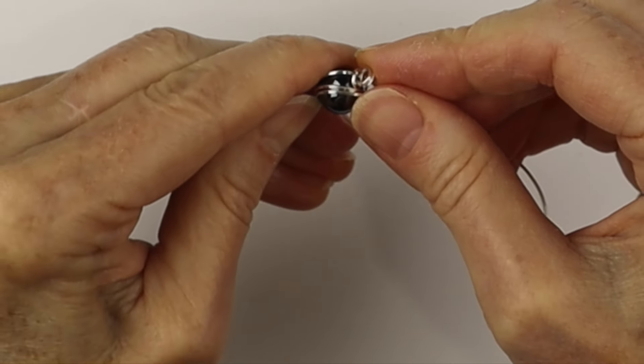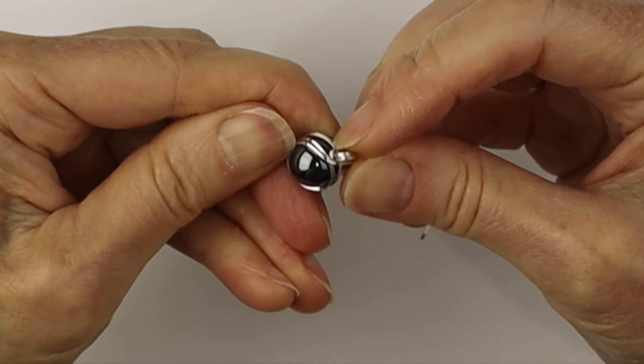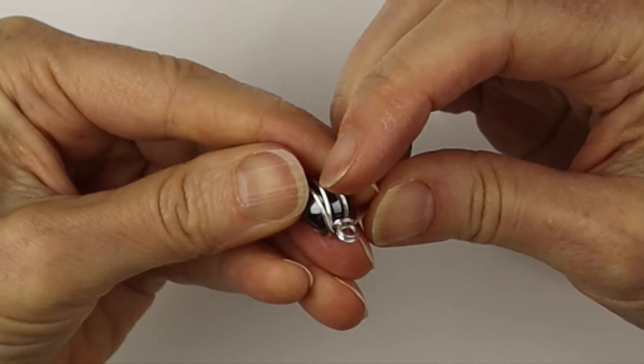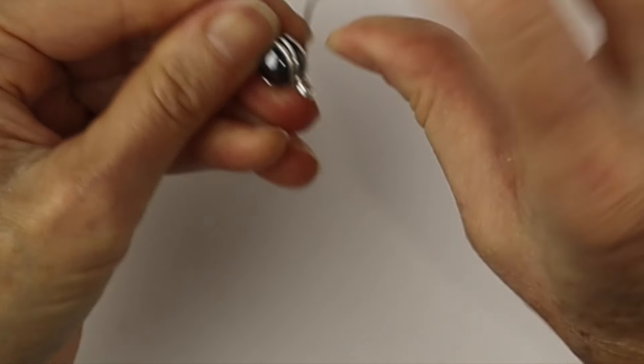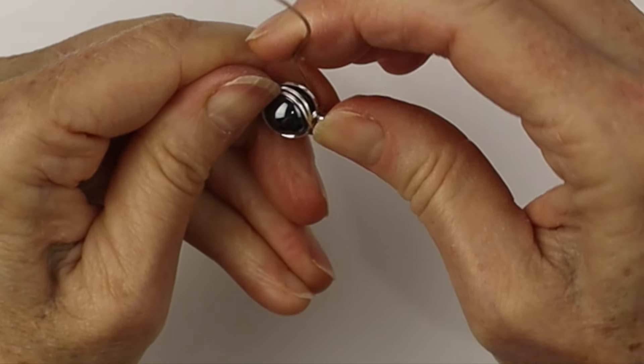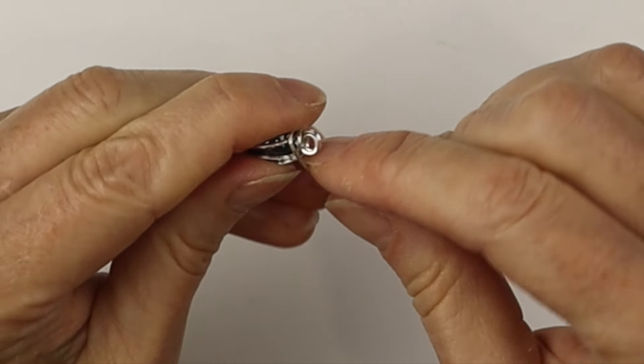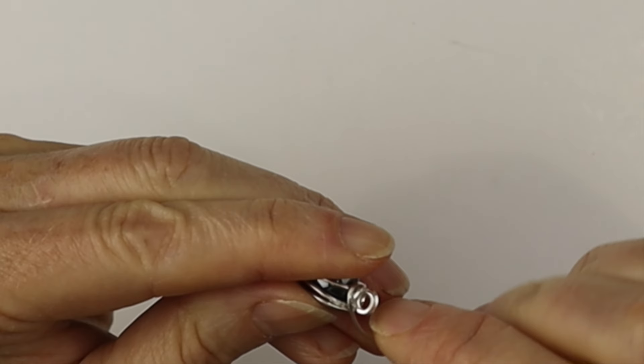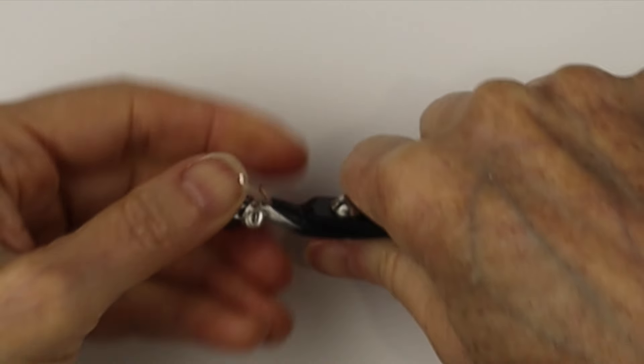Then we're going to hold it very firmly and bend the end around the upper wire. So bring it right around to the front and just give it a little wiggle so it's firmly in place.